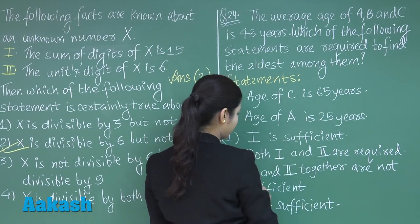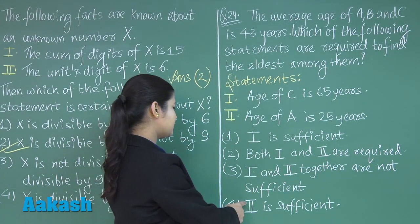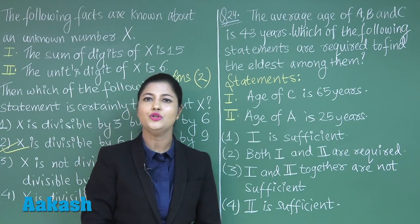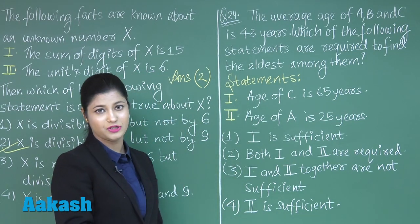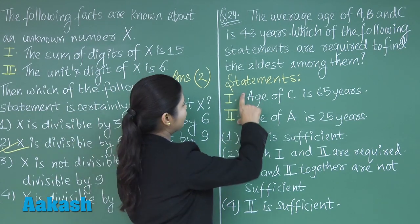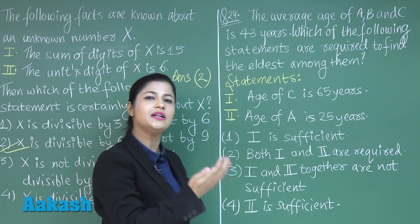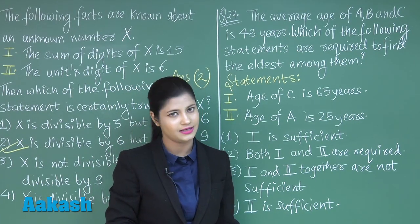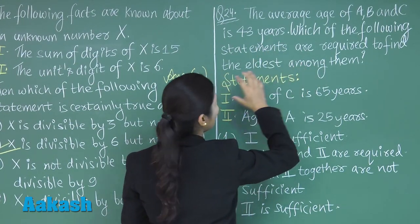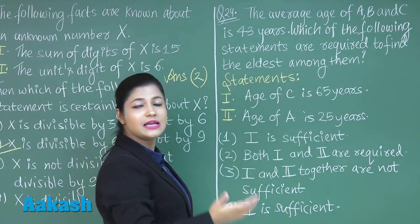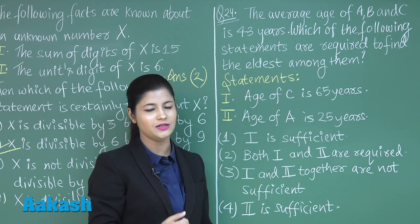The options are: option 1 — statement 1 alone is sufficient; option 2 — both statements 1 and 2 are required; option 3 — statements 1 and 2 together are not sufficient; option 4 — statement 2 alone is sufficient. This type of question is called data sufficiency. The main question is: the average age of A, B and C is 43 years, so A plus B plus C divided by 3 equals 43.